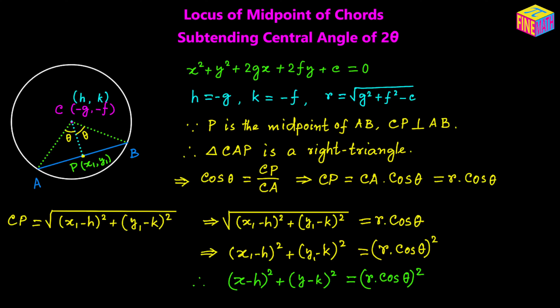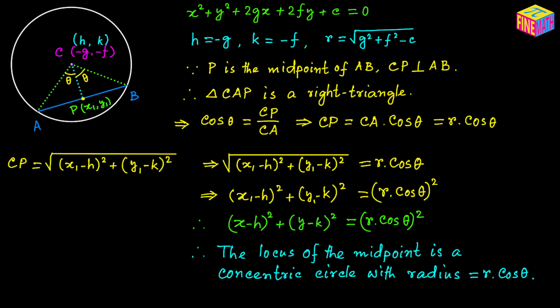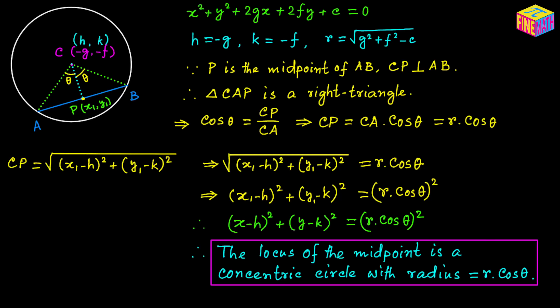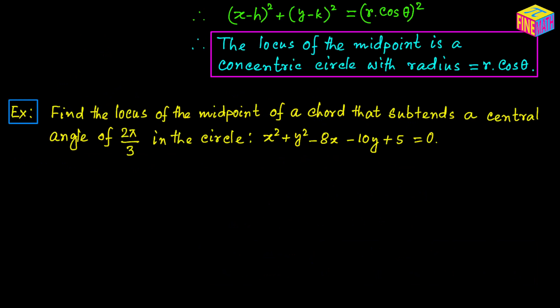So the locus of the midpoint is a concentric circle with radius r times cosine theta, where r is the radius of the original circle and theta is half of the central angle subtended by the chord. Next, let's take an example: find the locus of the midpoint of a chord that subtends a central angle of 2π over 3 in the circle x squared plus y squared minus 8x minus 10y plus 5 equals 0.